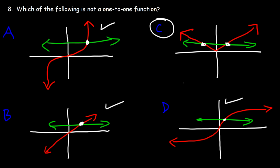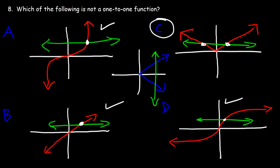If you were to draw the inverse function for C, it will look something like this. And since C is not a one-to-one function — since C doesn't pass the horizontal line test — the inverse will not pass the vertical line test. And so the inverse function is not a function.